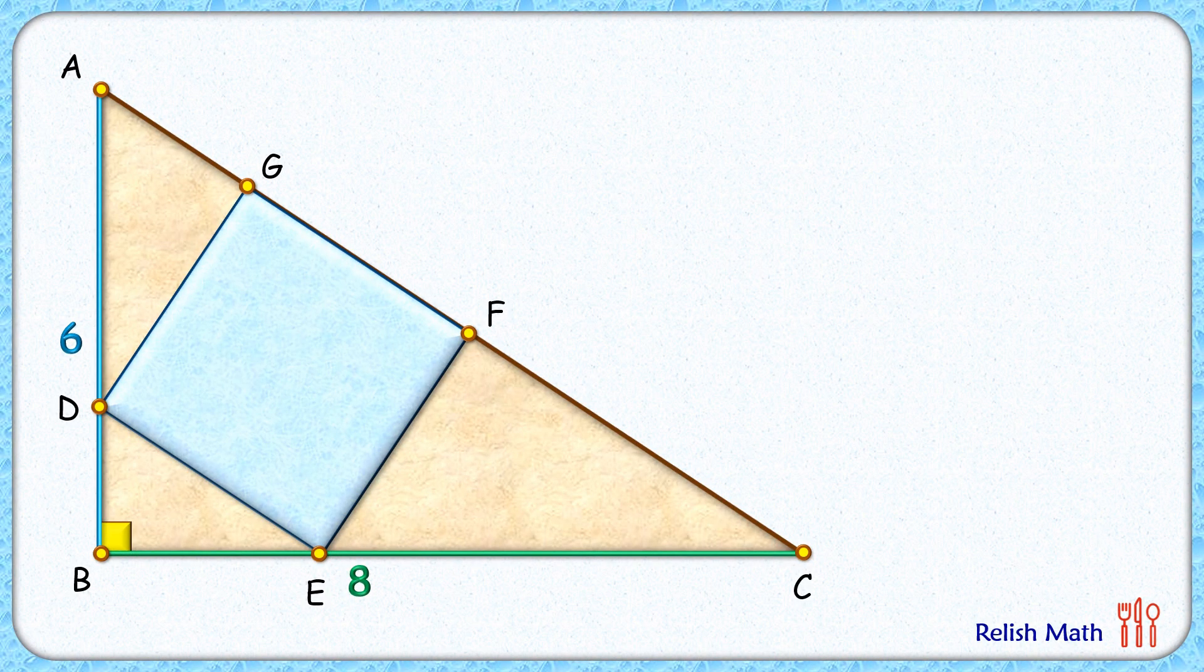Let's check this simple and elegant solution. Here the length AC we can find using Pythagoras theorem as 10 centimeters. Let's assume the side of the square is x centimeters and this angle A here is alpha degrees.